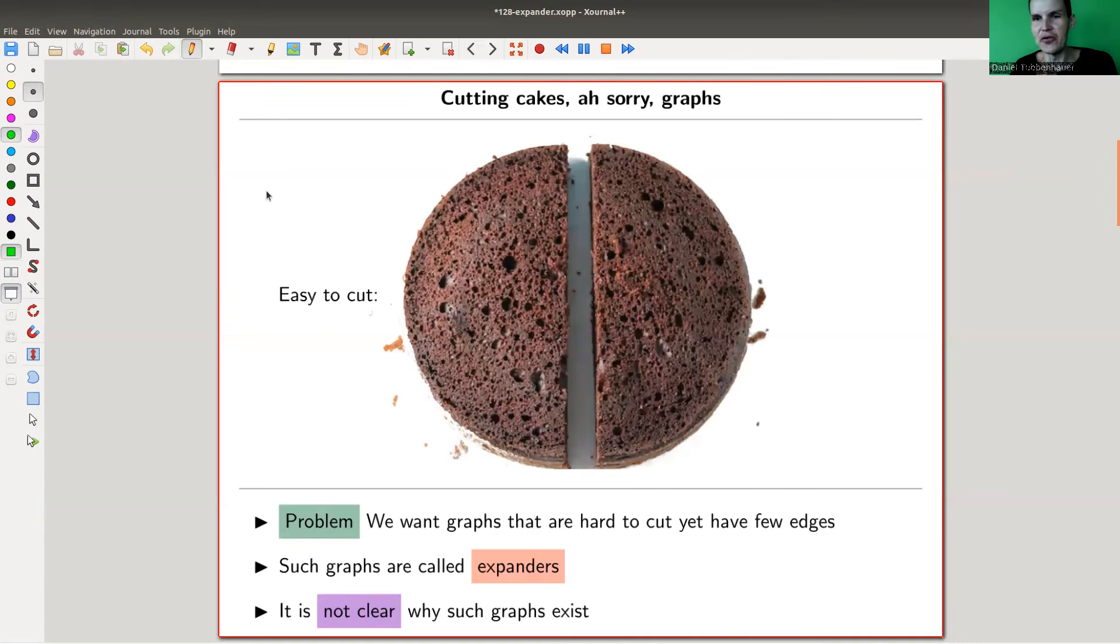They do exist, otherwise there wouldn't be a video, but we'll see what that actually means. The two contradicting properties is that they are very sparse, and at the same time very connected. Doesn't quite fit together. They don't have many edges if you want, but they somehow have a lot of edges in some other sense.